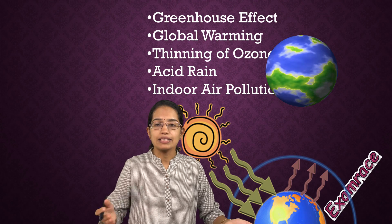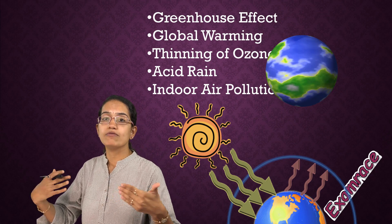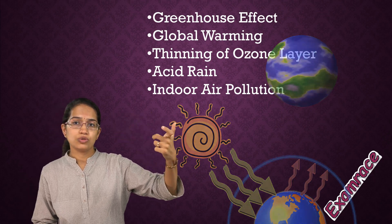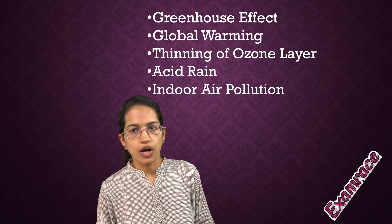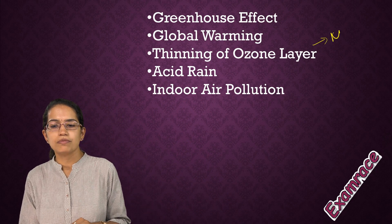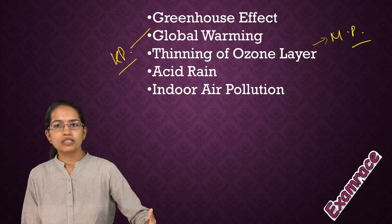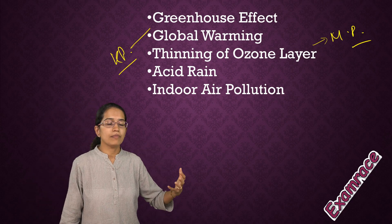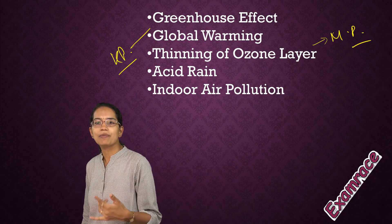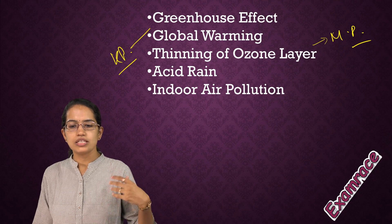We talk about the greenhouse effect and global warming — the temperature of the earth rising. We believe this should not go beyond the pre-industrial level by more than 1.5 degrees Celsius. We focus on thinning of the ozone layer caused by CFCs (chlorofluorocarbons), mainly found in refrigerators and air conditioners — under ozone protection, you have the Montreal Protocol. For global warming and the greenhouse effect, the Kyoto Protocol came in. We have a video covering 30 environmental conventions that is really interesting.